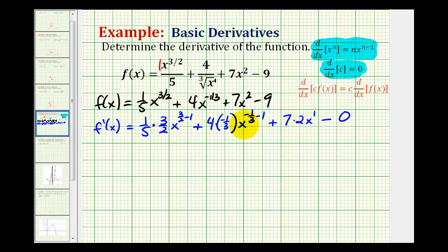Now that we have the derivative, the rest is algebra. We need to simplify these terms. So the first term, multiply the fractions, we'll have three-tenths. X to the three-halves minus one is one-half.